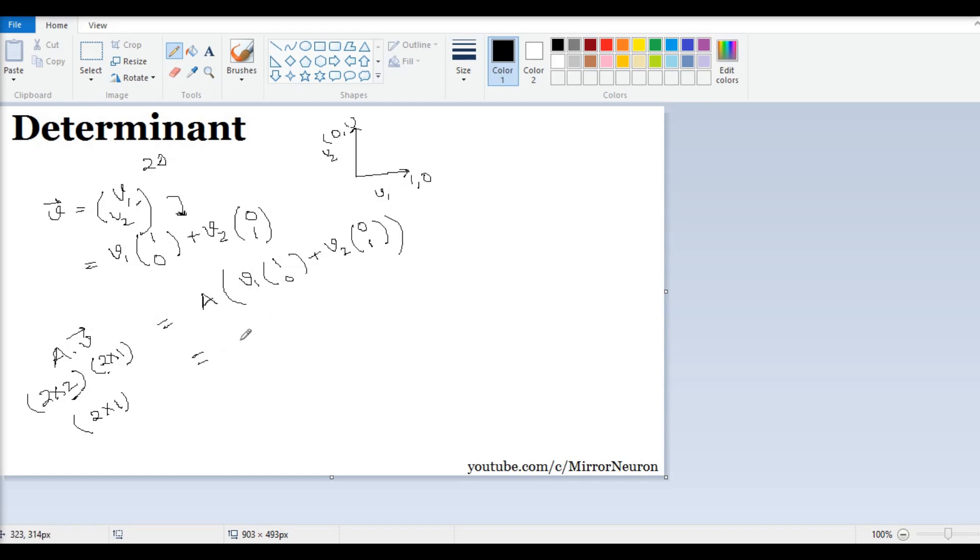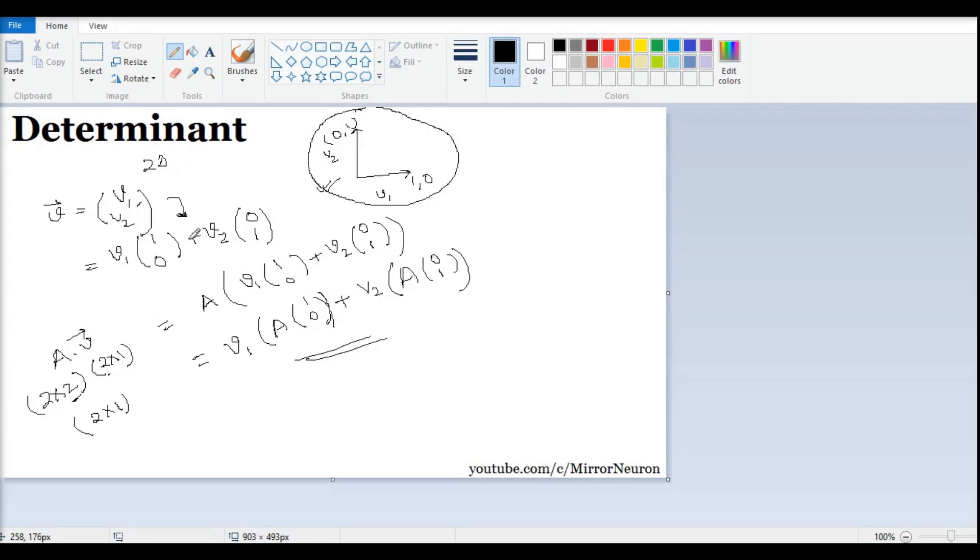What basically it will come out is A times V1(1,0) plus V2 times (0,1). This can be represented this way, which means that this representation initially with V1 and V2, now I have a multiplication factor A. That means this A is going to transform this space here. Let us look into this in more detail.